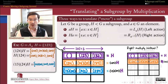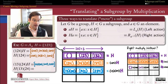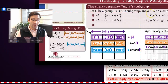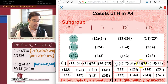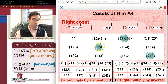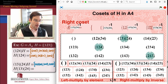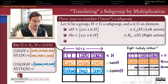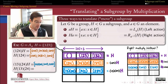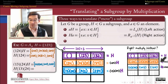Same thing with the right action by (1 3 2 4): if we multiply each element of H on the right by (1 3 2 4), the result — (1 3)(2 4), (1 2 4), (2 4 3) — turns out to be different from what we got by left multiplying those elements. But it's not different from what we got by right multiplying by (1 2 4). So something interesting has happened: the right coset of (1 3 2 4) ends up being exactly the same as the right coset of (1 2 4). This row is on the nose the same thing as the row that came before it.